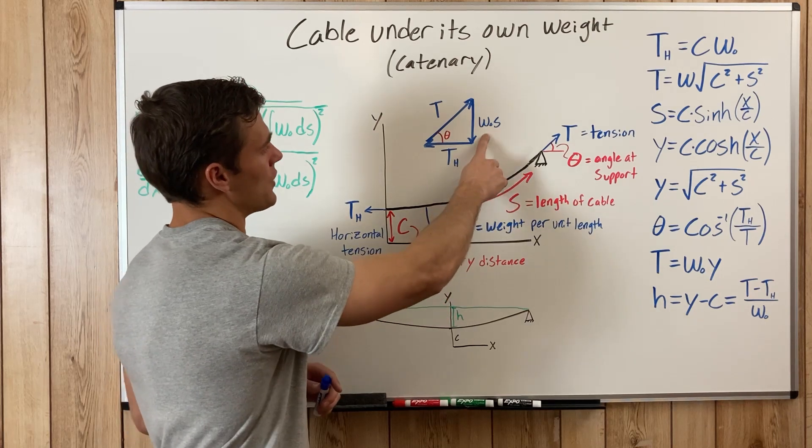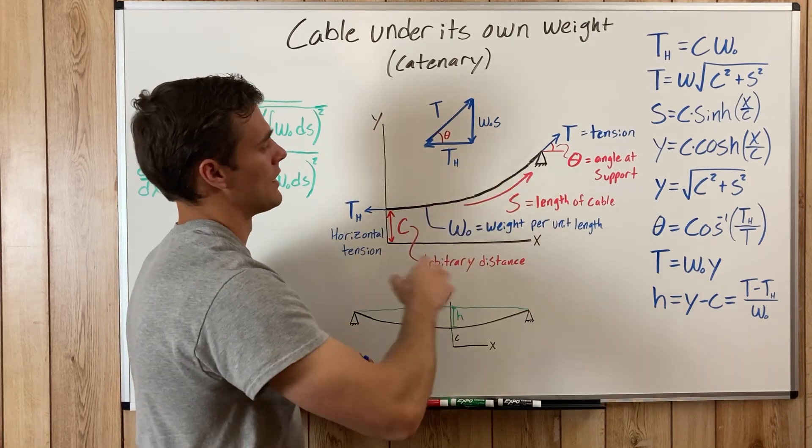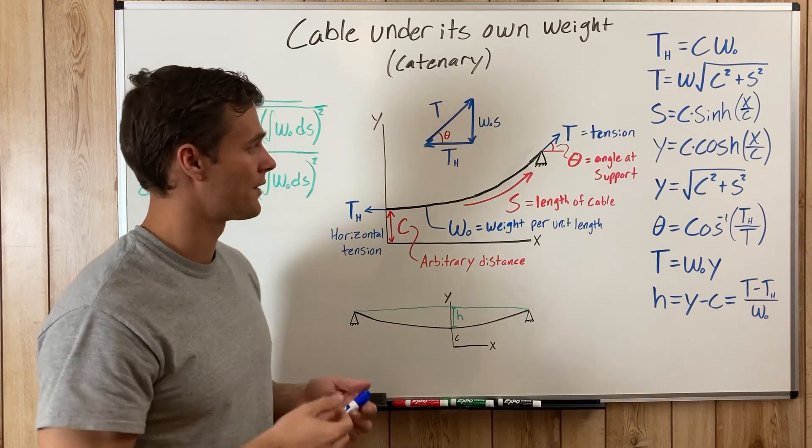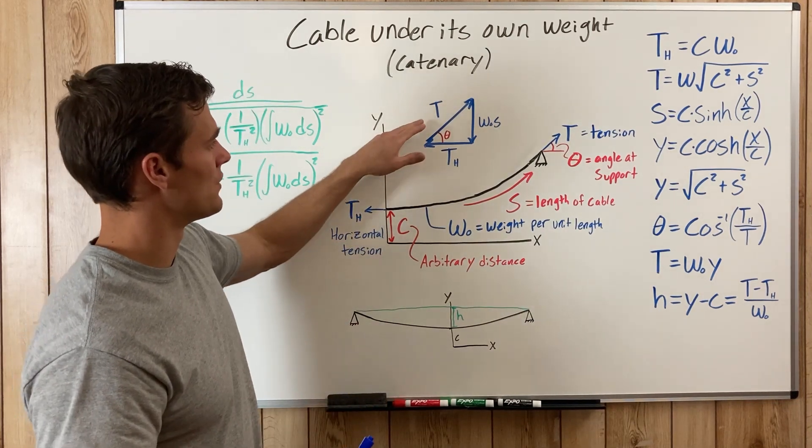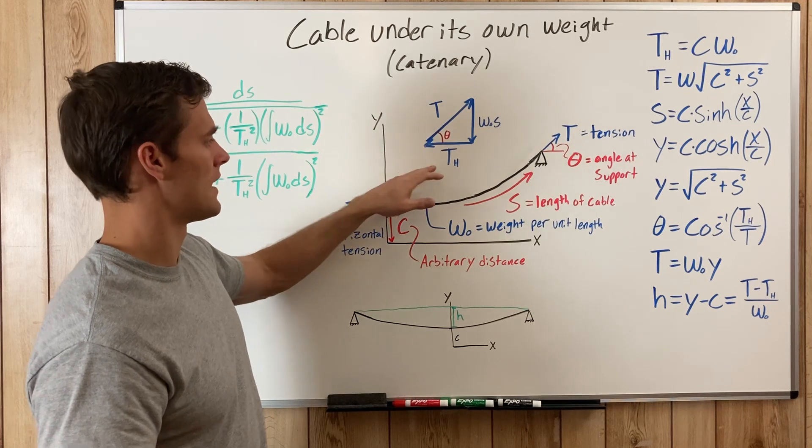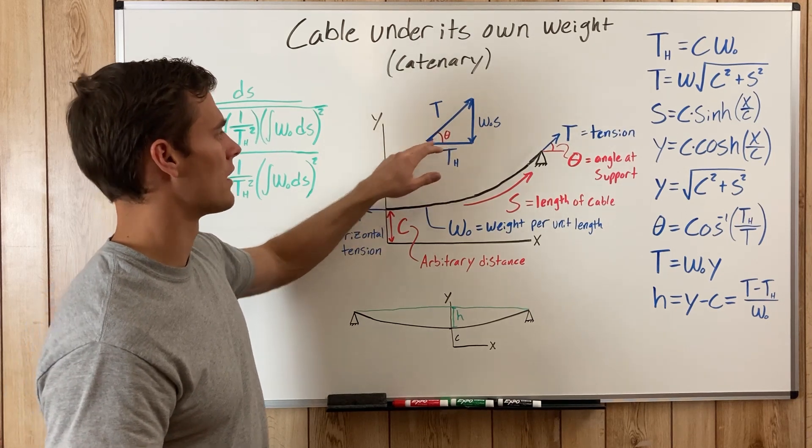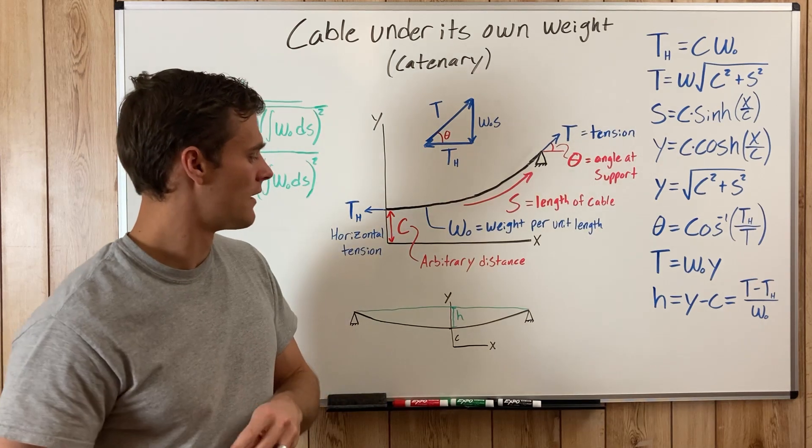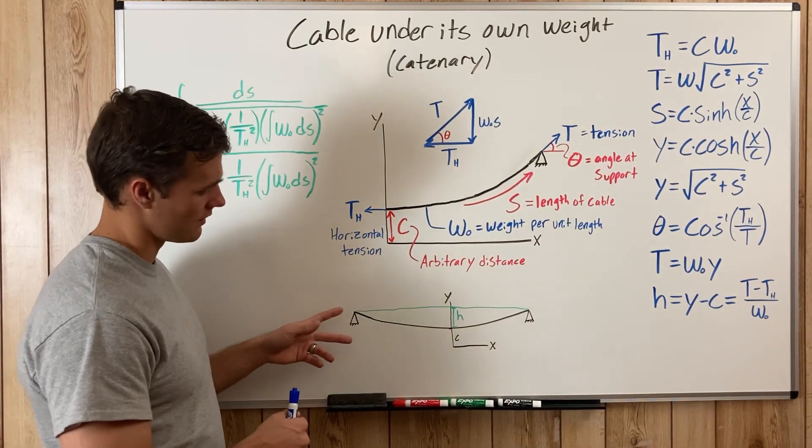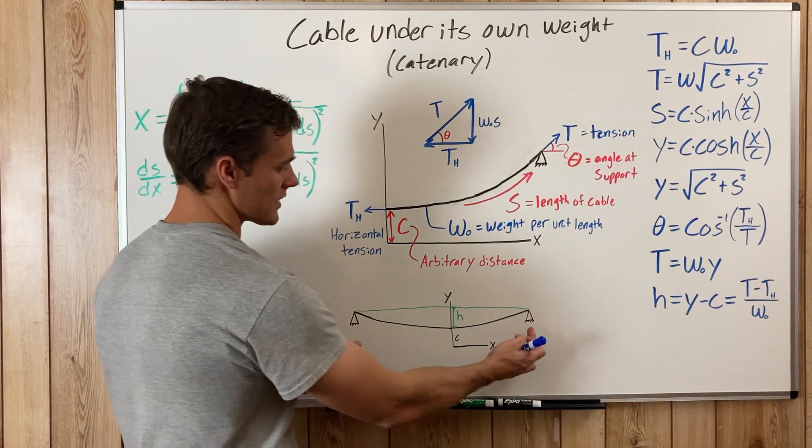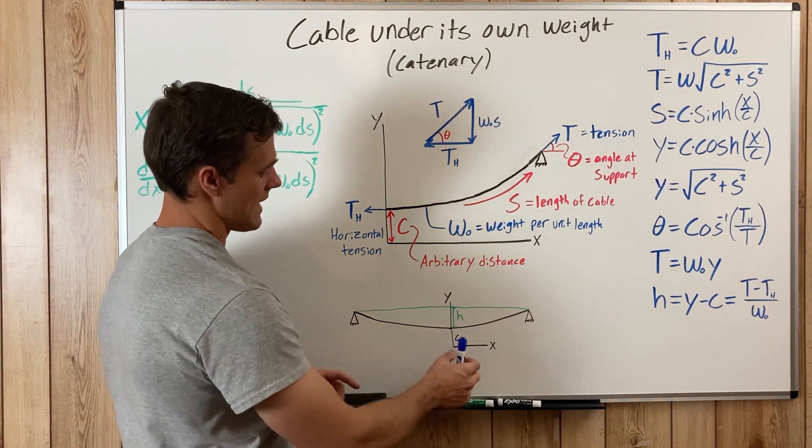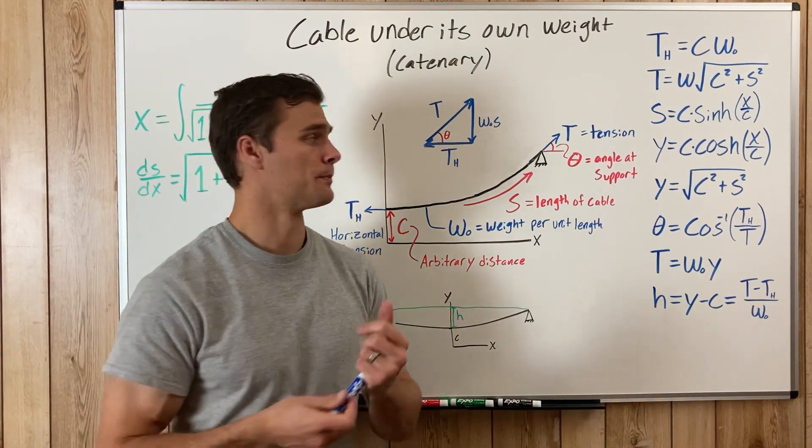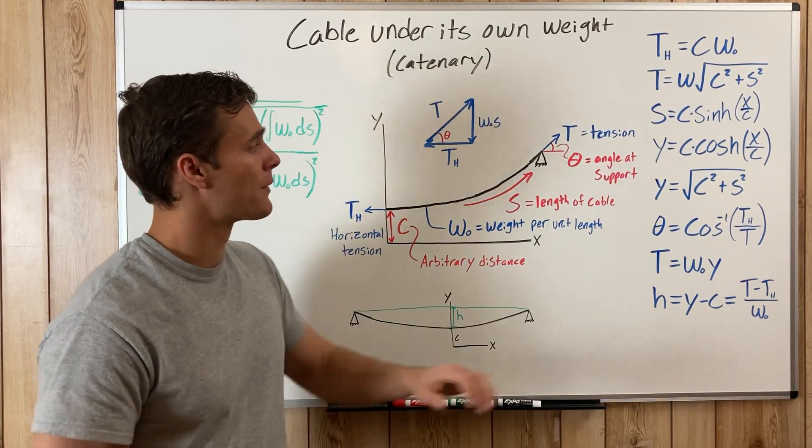With all that, you create this diagram where you have your weight per unit length times the length of the cable, and that gives you the weight of the cable pulling down. Then you have your tension and your horizontal tension with the angle θ between them, and that's how you get this equation. Then you have this diagram where the supports are at the same height, and this distance h is the sag of the cable.